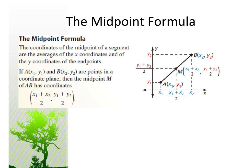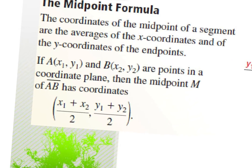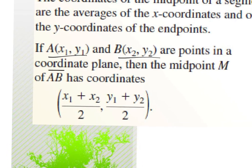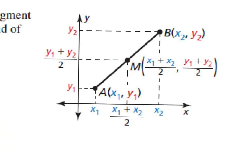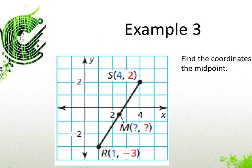The midpoint formula allows us to find the coordinates of the midpoint of a segment. It uses the averages of the x-coordinates and the averages of the y-coordinates. If you have two points A(x₁, y₁) and B(x₂, y₂), the midpoint is ((x₁ + x₂)/2, (y₁ + y₂)/2).